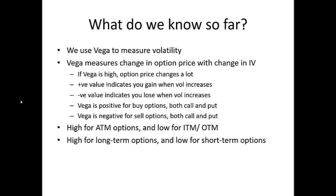Vega is high for long-term options and low for short-term options. Near expiry week, your option price won't change much due to volatility. But with a two or three month option on an index, even a one percentage point change in volatility will affect your option price quite a bit. So if you want to trade without taking significant vega risk, consider short-term options rather than long-term ones.